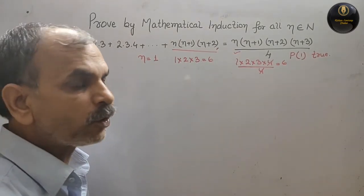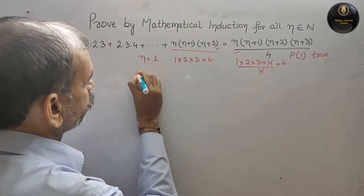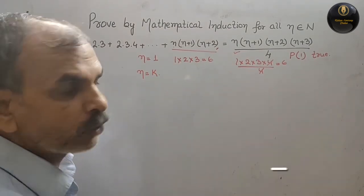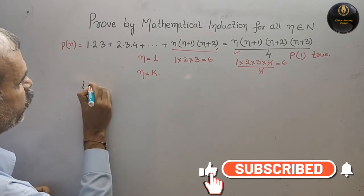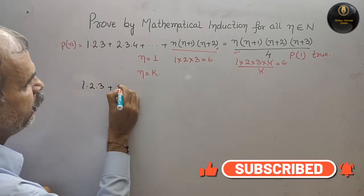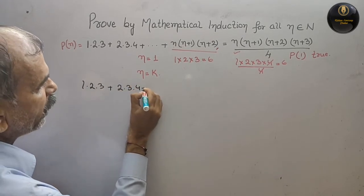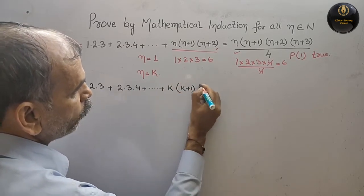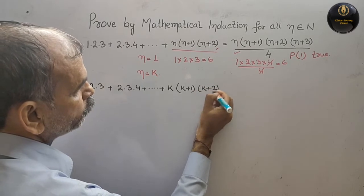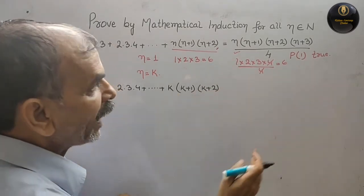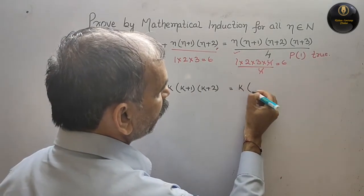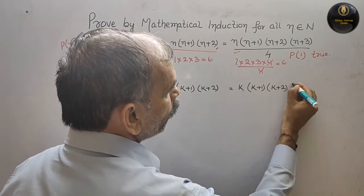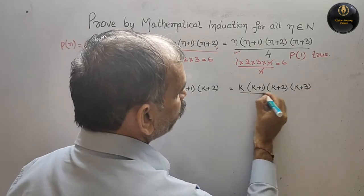The next step is to assume n = k. Substituting, the LHS becomes 1·2·3 + 2·3·4 + ... + k(k+1)(k+2), and the RHS becomes k(k+1)(k+2)(k+3) / 4. This is our inductive hypothesis.